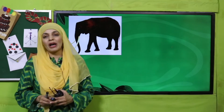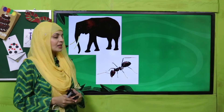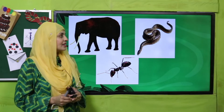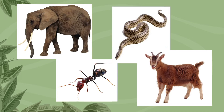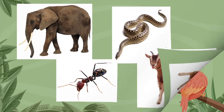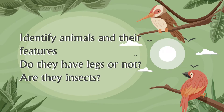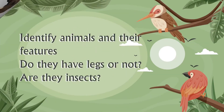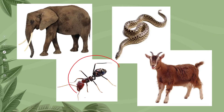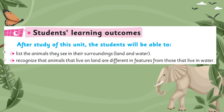Here on the screen you can see some pictures. First of all, you have to identify them — elephant, very good. And this is a snake, very good. Okay, now this is a goat. My dear students, after seeing these pictures I will ask some questions. Identify the animals and their features. Do they have legs or not? Elephant has legs, goat has legs, but snake does not have legs — it crawls on the land. Are they insects? No, not all of them are insects.